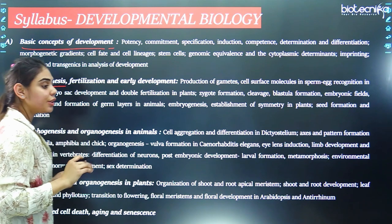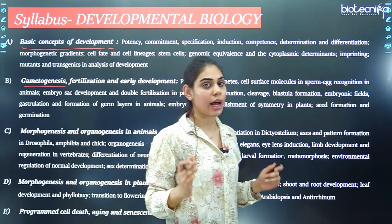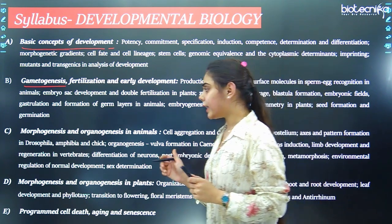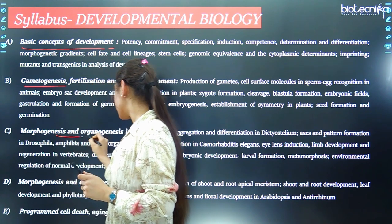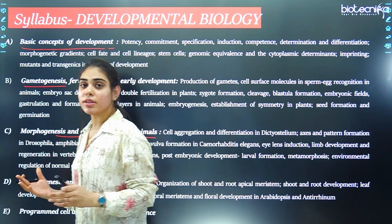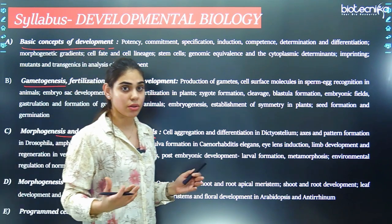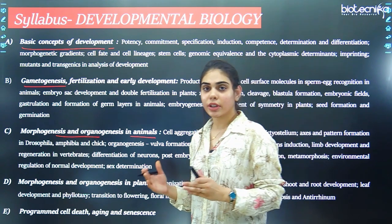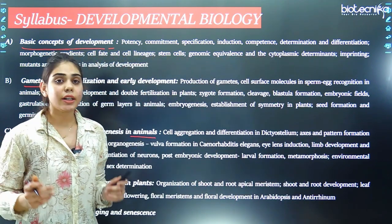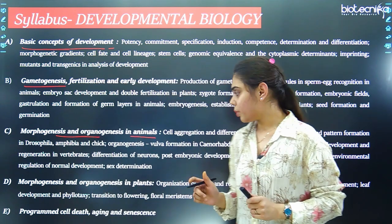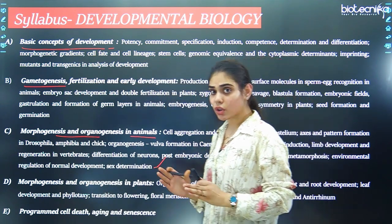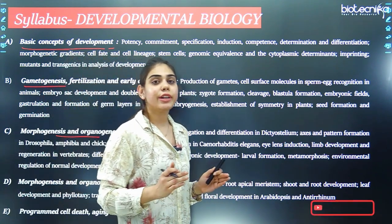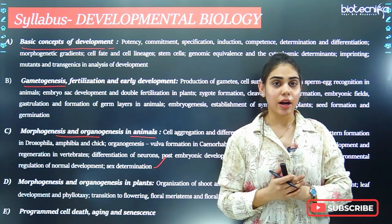The second portion deals with gametogenesis, fertilization, and early development. Here you need to study what fertilization is and how the embryo develops inside the mother's body. The third part is morphogenesis and organogenesis in animals. Here we study model organisms like C. elegans and Drosophila. We also learn about tetrapod limb development, chick development, and sex determination.